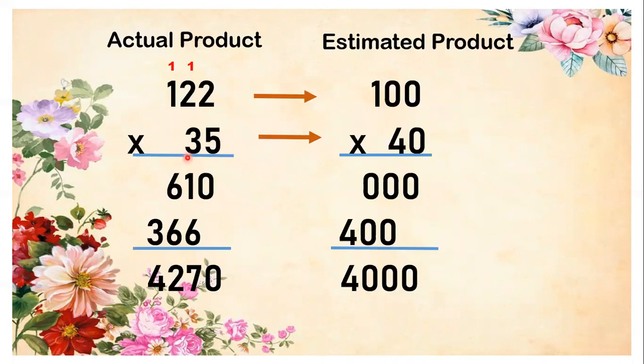Now let's go to the next multiplier, which is 3. Let's multiply 3 to the ones. 3 times 2 is equal to 6. 3 times 2 is equal to 6 again. 3 times 1 equals 3. Now we have another partial product, which is 366.